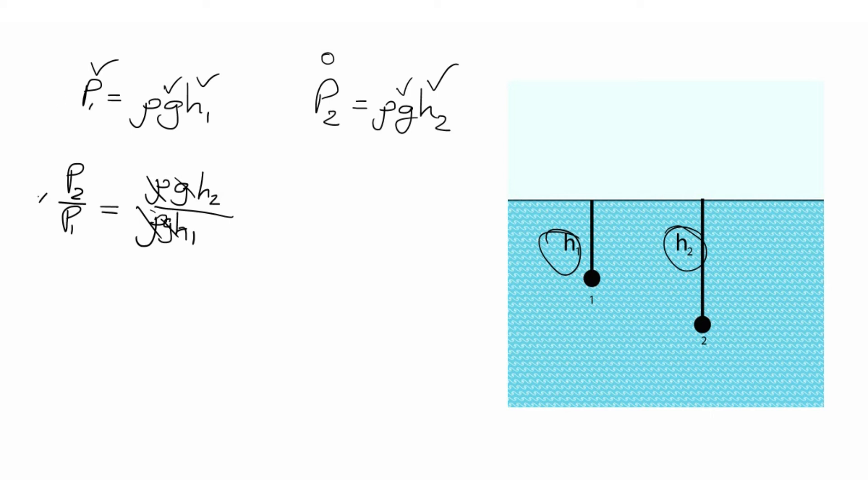Then if we cross multiply by P1 both sides, we are left with this expression which says that P2 equals H2 over H1 times P1.